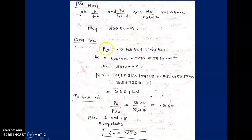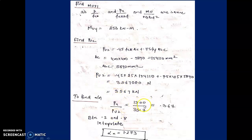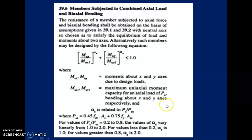The ratio Pu/Puz = 1300/3567 = 0.367. We now apply the interaction formula from IS 456 clause 39.6: (Mux/Mux1)^αn + (Muy/Muy1)^αn ≤ 1. The value of αn is determined from the code based on Pu/Puz: for values between 0.2 (αn=1) and 0.8 (αn=2), we interpolate. The interpolated value gives αn = 1.273.